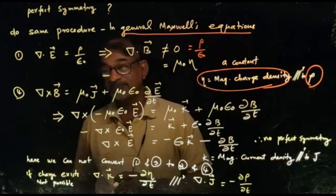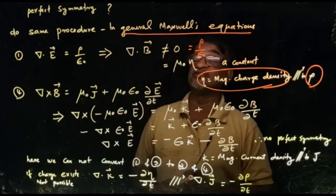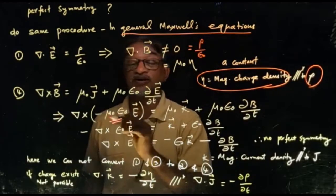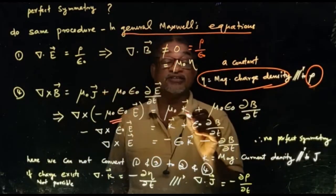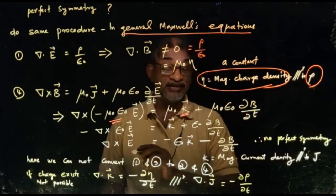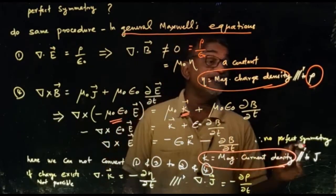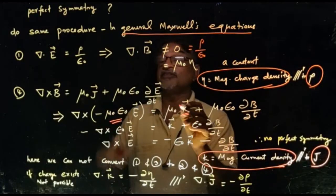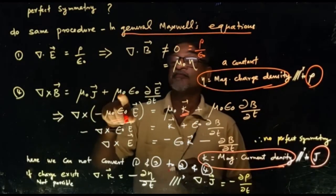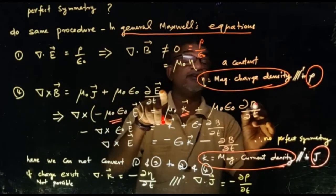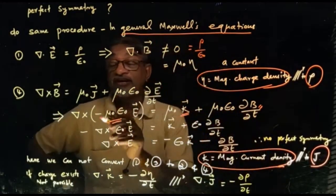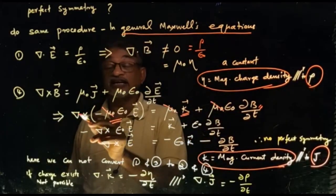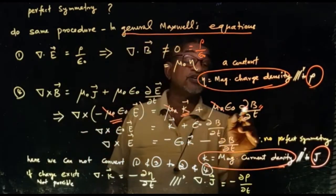For equation 4, ∇×B = μ₀J + μ₀ε₀ ∂E/∂t: replacing B with −μ₀ε₀E and J with K (the magnetic current density, analogous to J in electrostatics), we get ∇×(−μ₀ε₀E) = μ₀K + μ₀ε₀ ∂B/∂t. Cancelling μ₀, this becomes −ε₀(∇×E) = K + ε₀ ∂B/∂t.